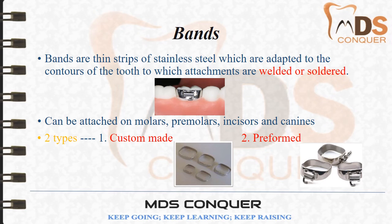Bands are thin strips of stainless steel which are adapted to the contours of teeth, to which attachments can be welded or soldered. They can be attached to molars, premolars, incisors, or canines depending upon the situation. Bands can be of two types: custom made or preformed.